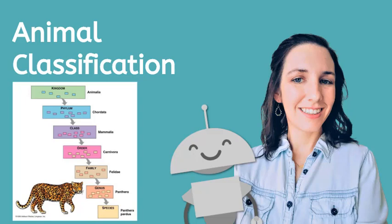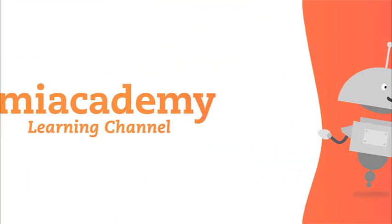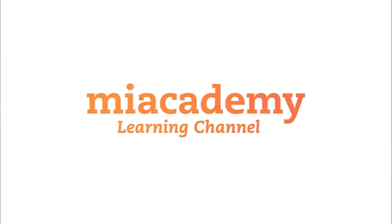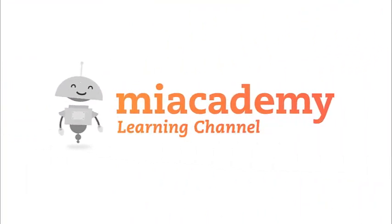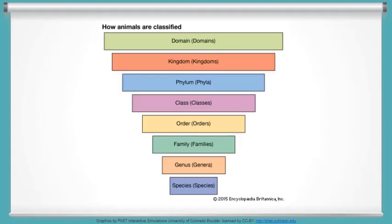Taxonomies are often shown as a tree having many branches, or an inverted pyramid that becomes more specific as you go on. The taxonomy for living things has five levels to it, from most general to most specific.